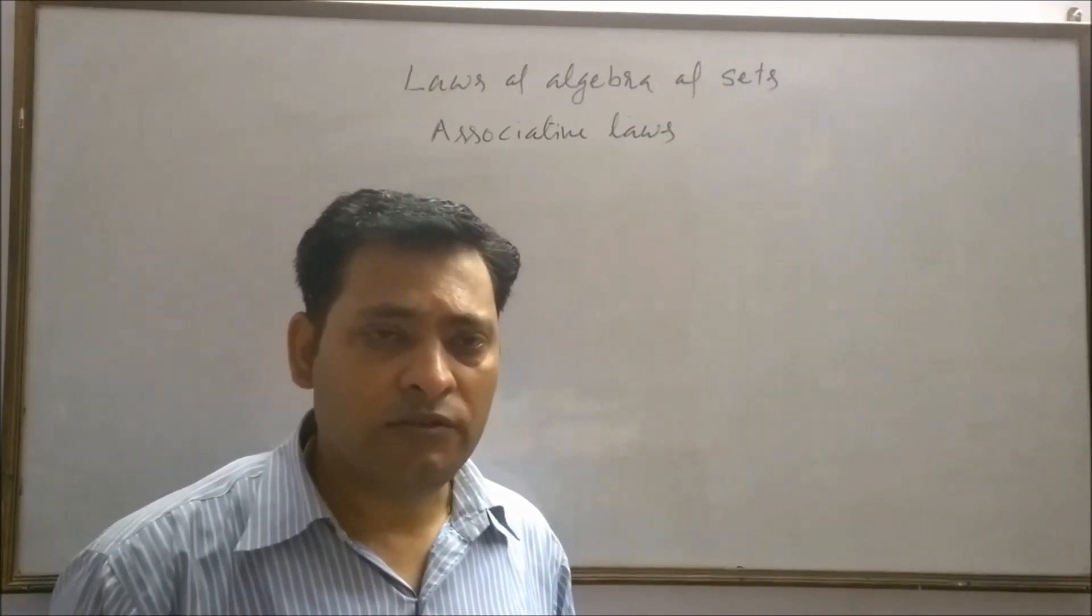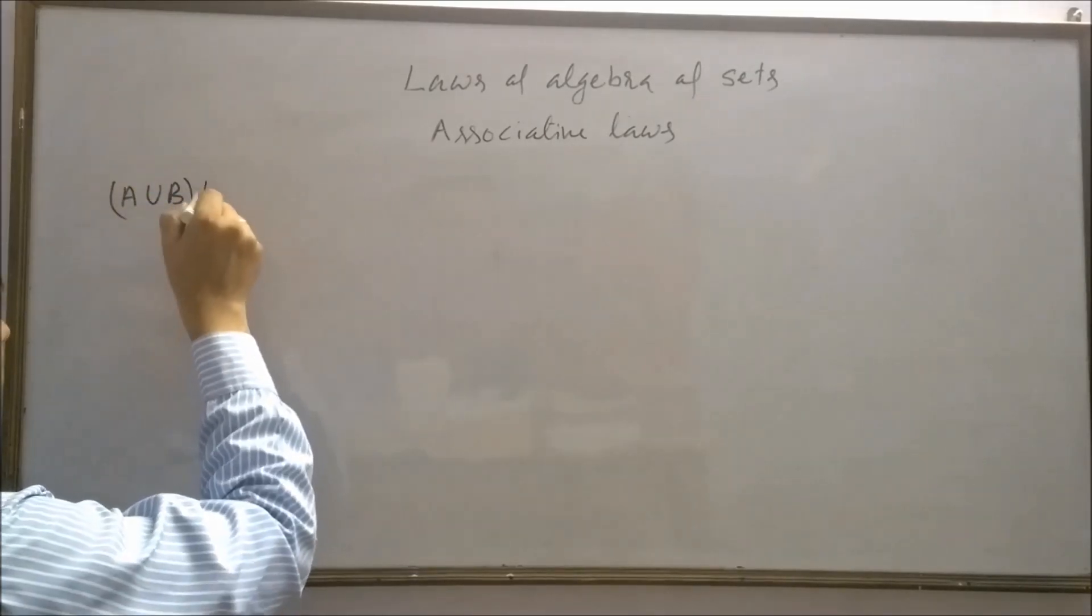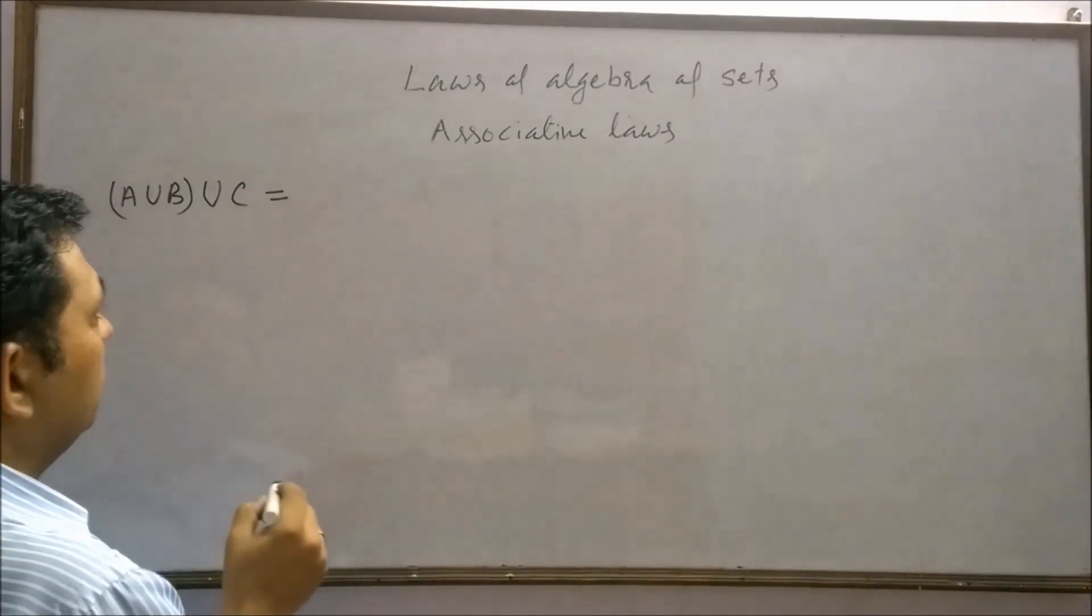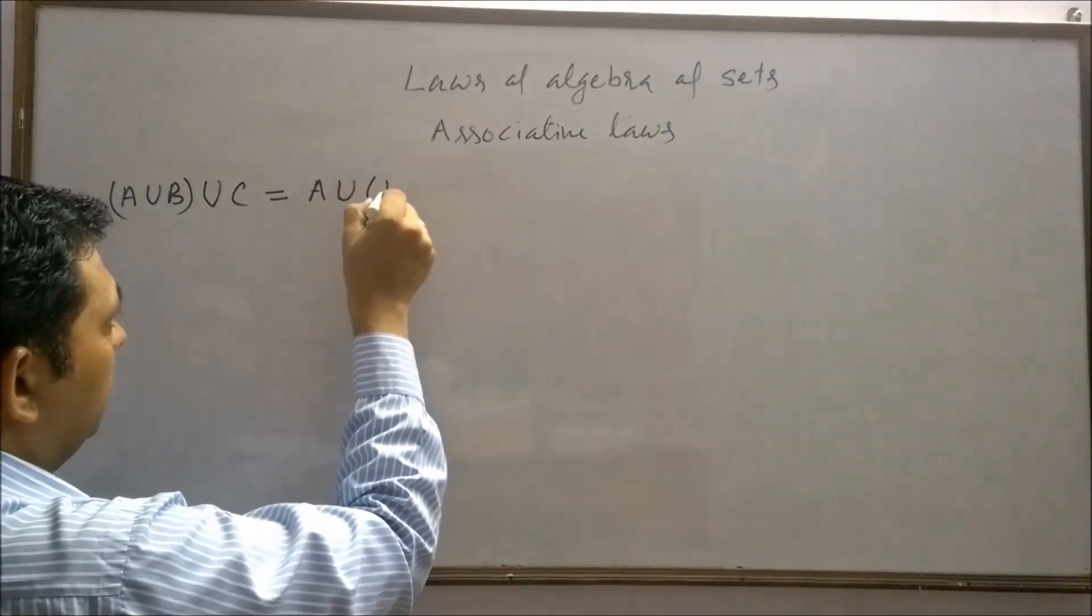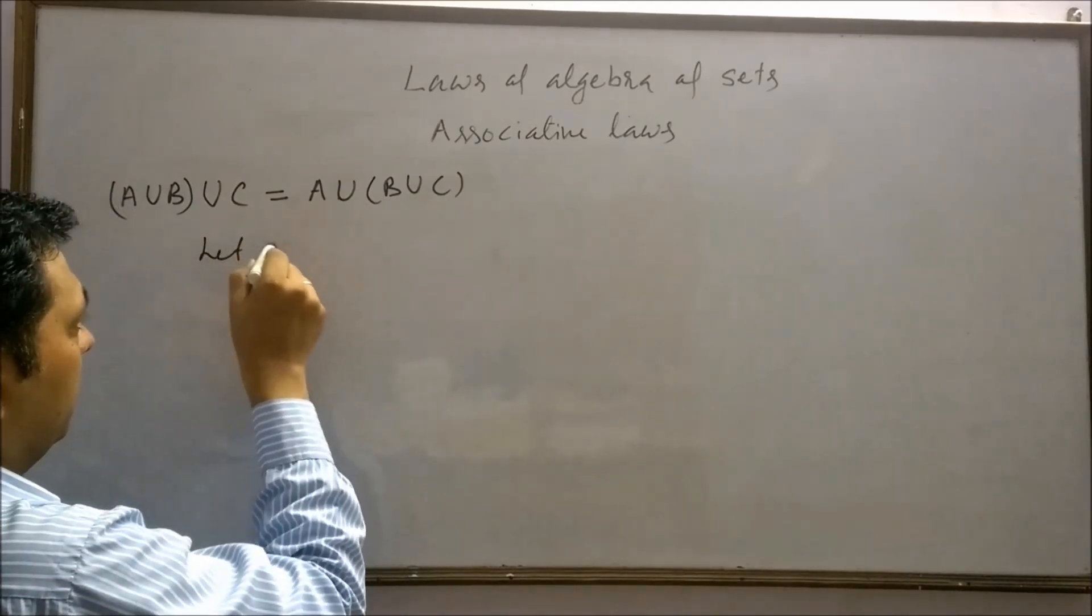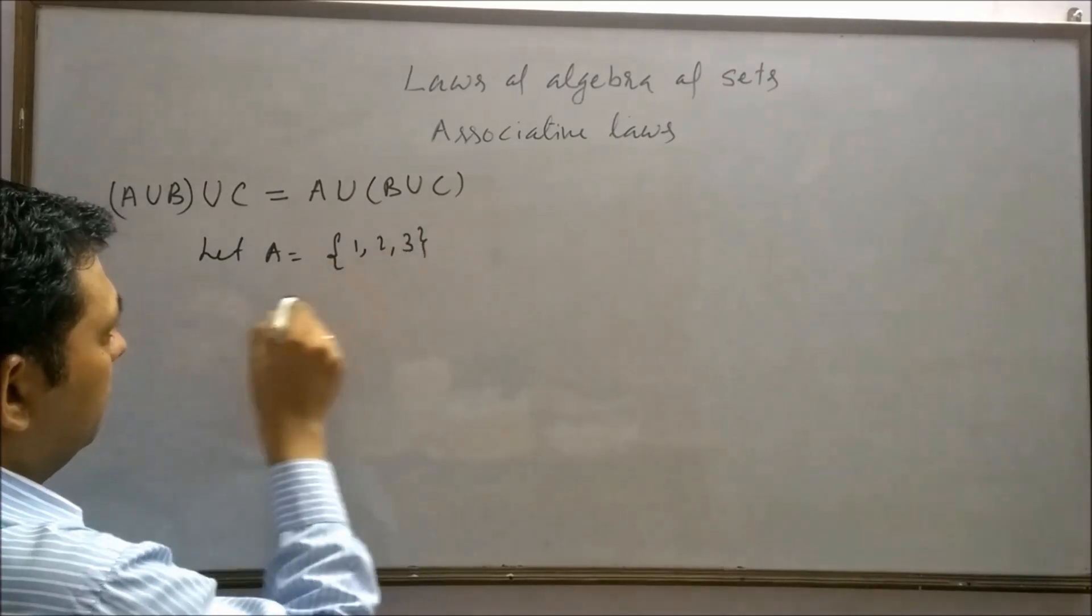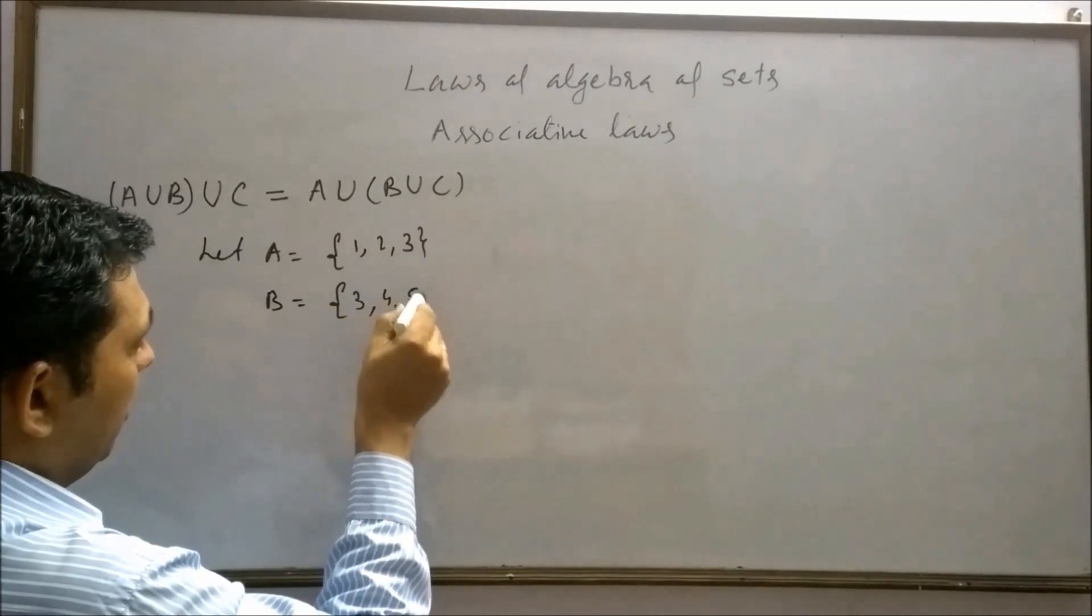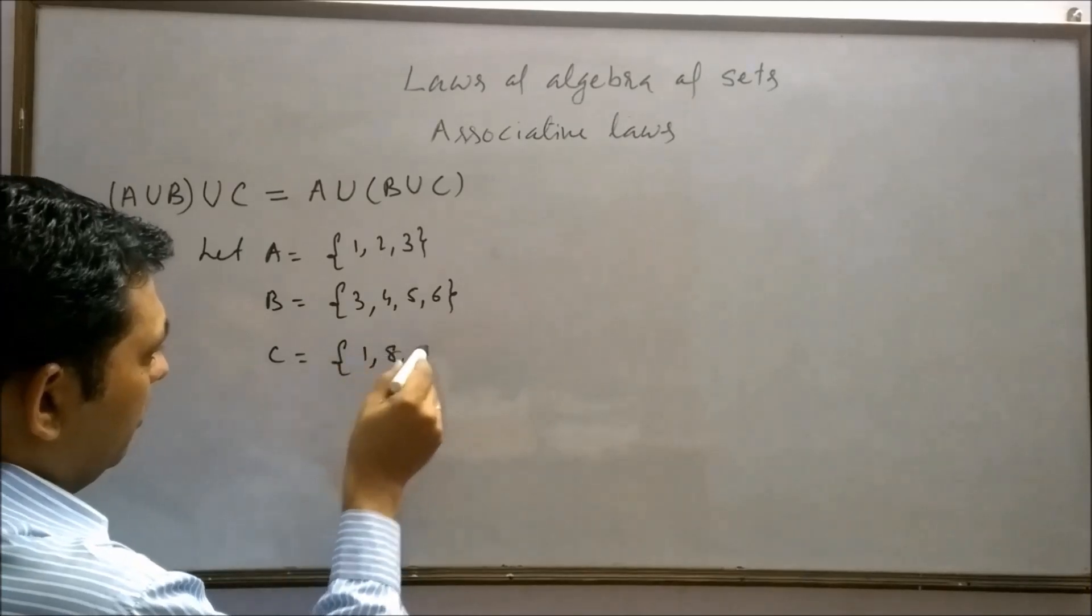Now I am going to discuss associated law for union. A union B set associates with set C. That will be equal to set A union B union C. Let A contain first three natural number 1, 2, 3. B contain 3, 4, 5, and 6. C contain 1, 8, 9.